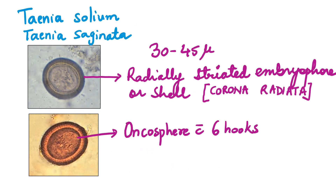Next we move on to Taenia solium, the pork tapeworm, and Taenia saginata, the beef tapeworm. The eggs are absolutely similar in intestinal taeniases due to either of them. These eggs are 30 to 45 microns in size, rounded. The hexacanth onchosphere is surrounded by a typical radially striated embryophore, also called the corona radiata. You can appreciate these radiations in the shell. So 30 to 45 microns, radially striated embryophore enclosing the onchosphere with six hooks — both eggs are absolutely similar.